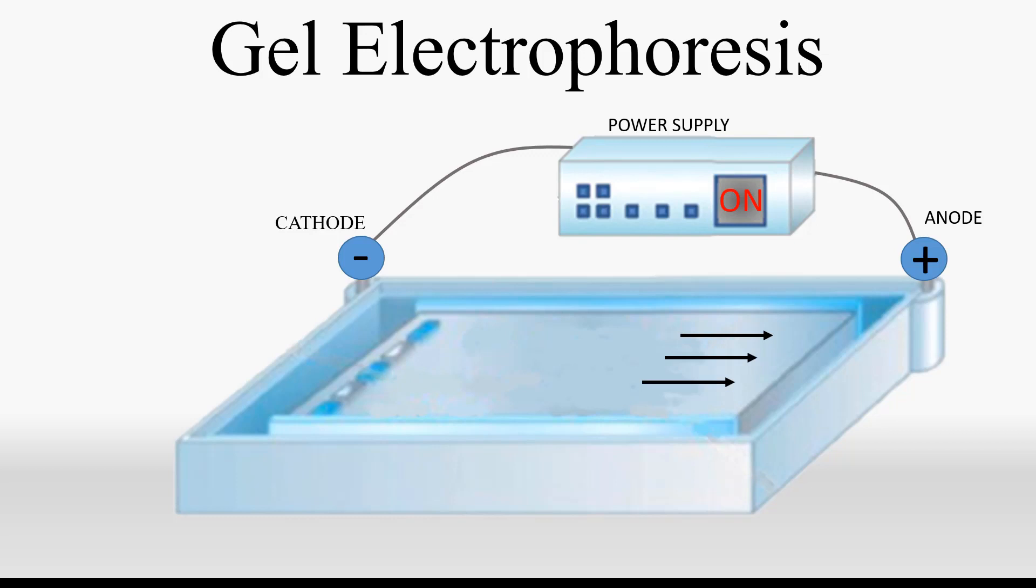We're going to look at the simplest example of gel electrophoresis for the separation of DNA, but keep in mind that this is a very versatile tool that can be modified for other types of molecules and is regularly used to separate not just DNA, but RNA and protein as well.